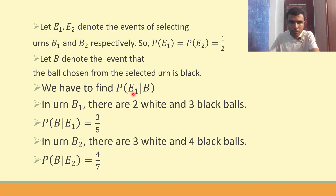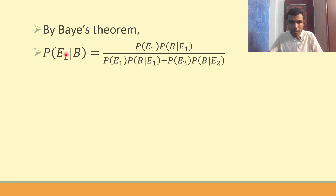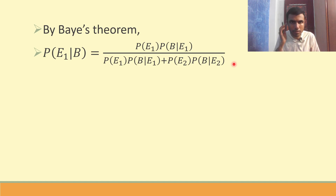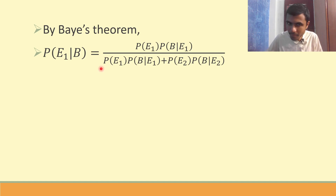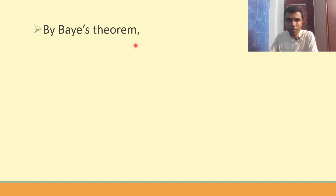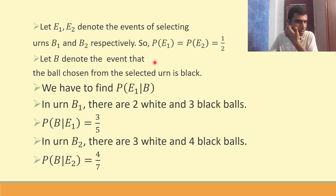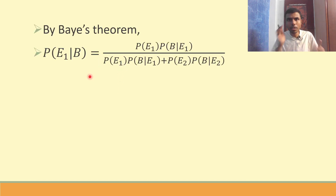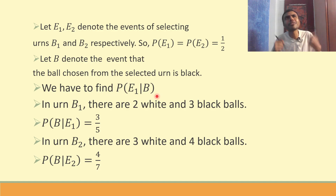By Bayes' theorem, P(E1|B) = [P(E1) × P(B|E1)] / [P(E1) × P(B|E1) + P(E2) × P(B|E2)]. You can refer to the Bayes' theorem video I already made in the playlist. All the values are known: P(E1) = P(E2) = 1/2, P(B|E1) = 3/5, P(B|E2) = 4/7. You need to understand what is what — if you just memorize and go to the exam, you will forget whether to find P(E1|B) or P(B|E1).